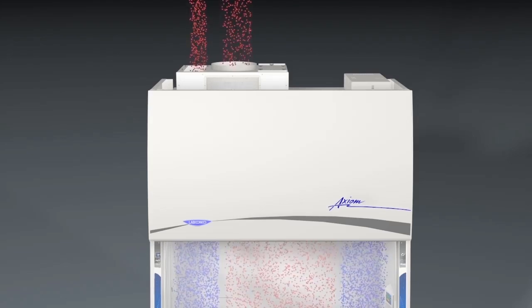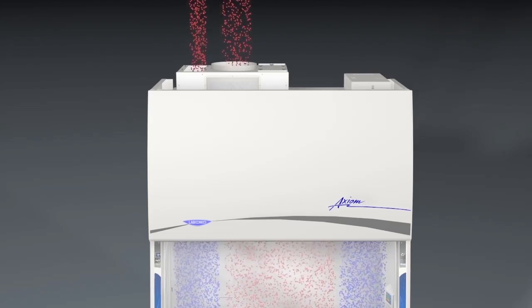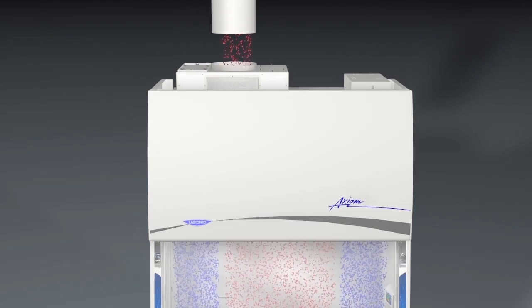However, if hazardous chemistry or odorous work is being performed in the cabinet, the cabinet should be installed in Type B mode.